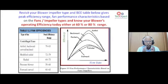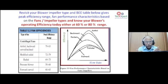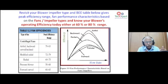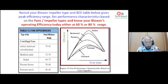Energy auditors check whether existing blowers are in line with the BEE reference table. Most industries — eight out of ten — use centrifugal backward-curved impellers. Per the reference ranges: airfoil (backward curved/inclined) achieves 79–83% efficiency; modified radial 70–79%; radial only 69–75%. Forward-curved impellers come last in efficiency. Every blower is chosen by the process expert to match process requirements, but as energy auditors we also ensure the blower efficiency is considered.